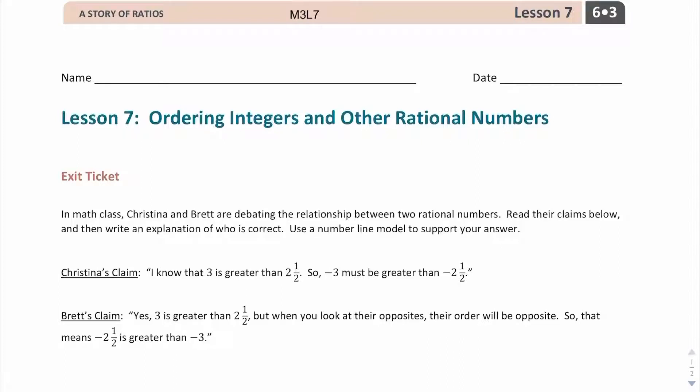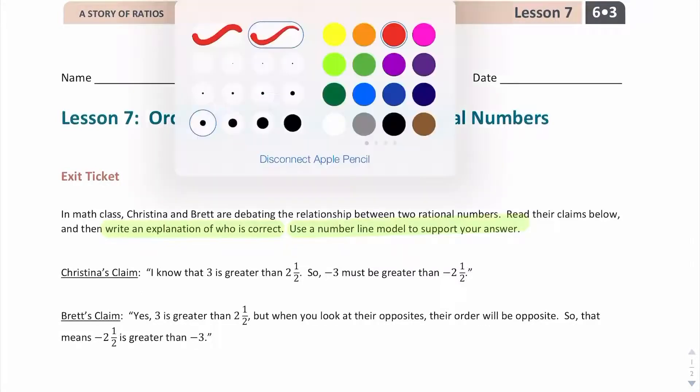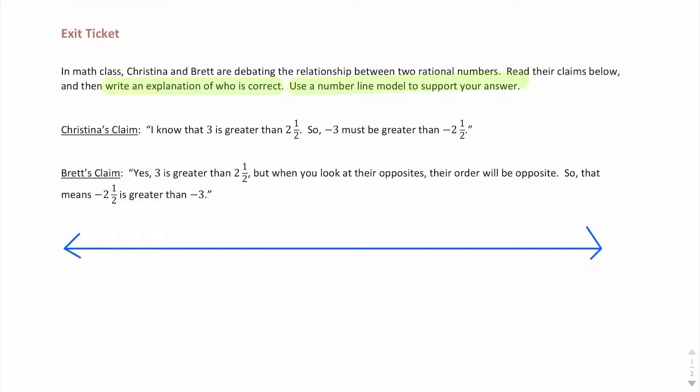So I'm going to go ahead and create the number line first. I see numbers 2.5, 3, negative 2.5, negative 3. So I think a good idea would be to start my number line right in the middle with a 0.